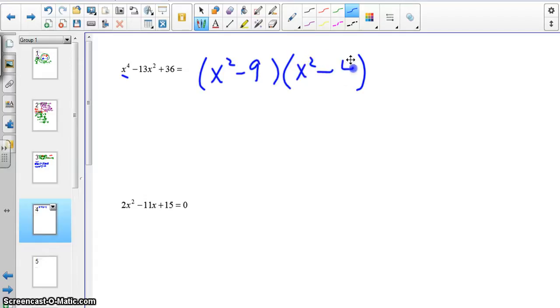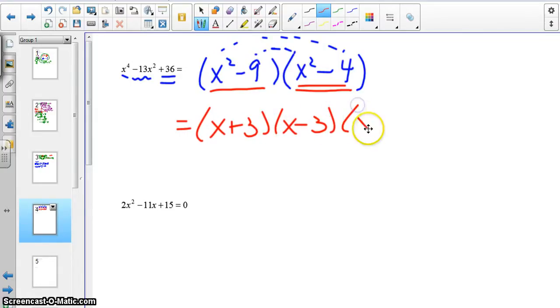And then this part along with this part would combine to give you the negative 13x to the second. So I look at this now and I say, oh, I can factor further because both of these terms are difference of squares, right? This is a difference of squares and this is a difference of squares. So I'd have x plus 3, x minus 3, and then x plus 2, and x minus 2. And that would be my completely factored form.